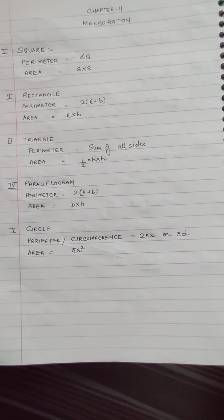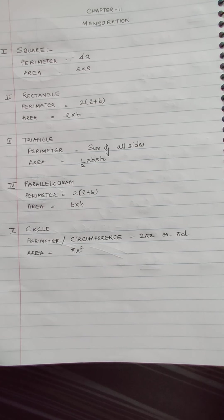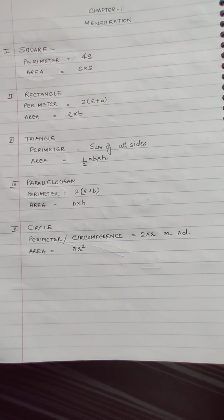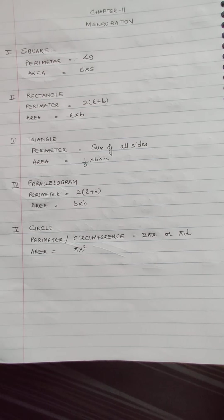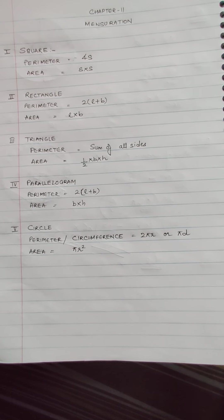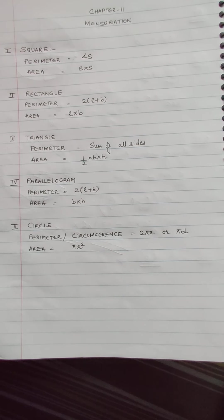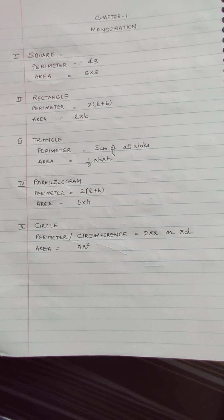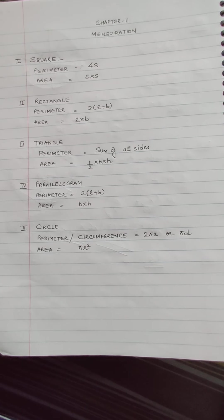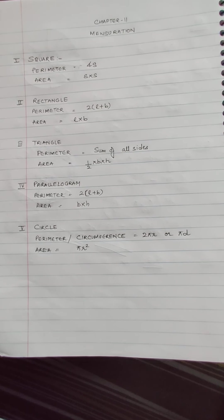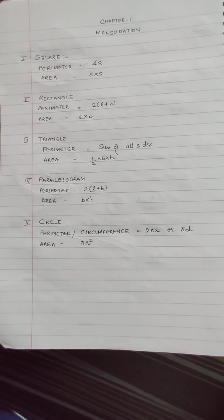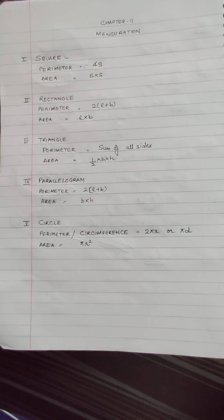So the first exercise is basic, which we have seen in previous classes: square, rectangle, triangle, circle, parallelogram — we have seen the perimeter and area already. So we are going to just revise that, and on that basis, we are going to do a few more questions.